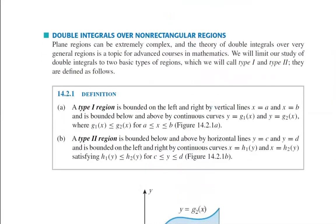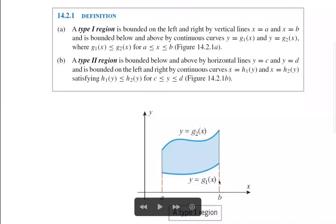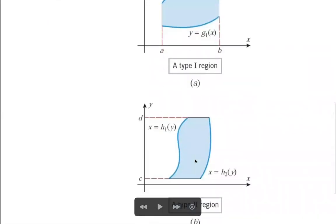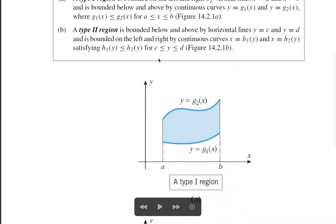Now, double integrals over non-rectangular regions — Type 1 and Type 2. A Type 1 region is bounded on the left and right by vertical lines x = a and x = b, and bounded below and above by functions g1(x) and g2(x), where g1(x) ≤ g2(x) for a ≤ x ≤ b. A Type 2 region has y varying from c to d and x varying from h1(y) to h2(y), where h1(y) ≤ h2(y) for c ≤ y ≤ d.